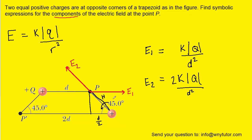The challenge with E2 is that it points at an angle — it has both an x component and a y component. Because we have two parallel lines cut by a transversal, the angle at point P is also 45 degrees. The x component is adjacent to that 45-degree angle, so it equals E2·cos(45°), and since it points to the left it carries a negative sign. The y component is opposite the 45-degree angle, so it equals E2·sin(45°), pointing straight up and remaining positive.